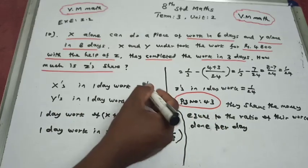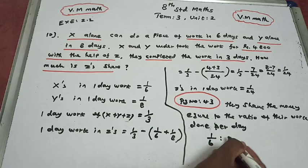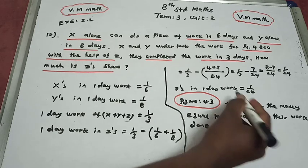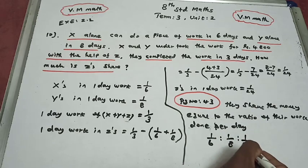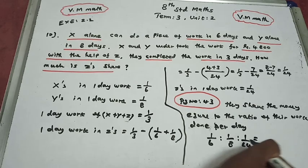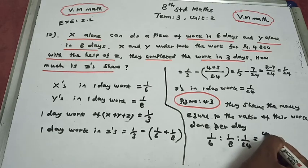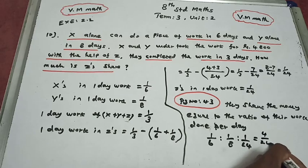X's 1-day work is 1/6, Y's is 1/8, and Z's is 1/24. Multiplying each by the LCM of 24: X gets 4, Y gets 3, and Z gets 1. So the ratio is 4 : 3 : 1.